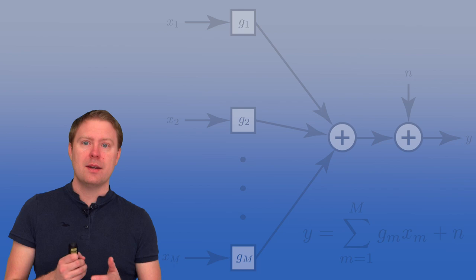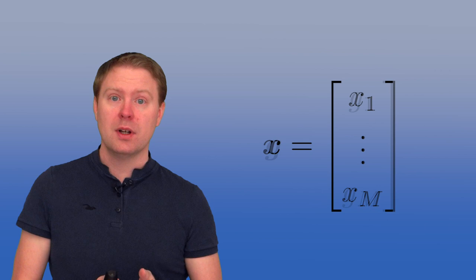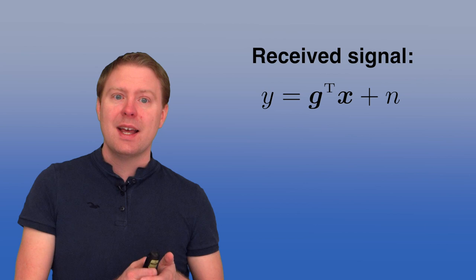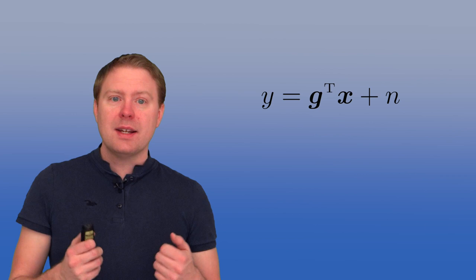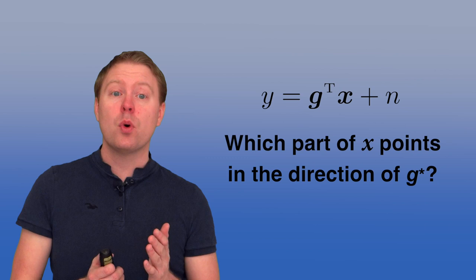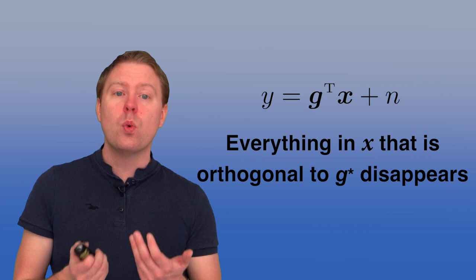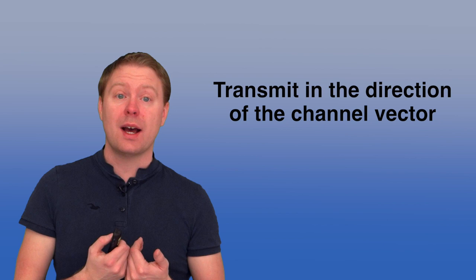It is convenient to represent this channel using vectors as well. We put all transmitted signals X1 to XM in a transmit vector X, and all channels G1 to GM in a channel vector G. The received scalar Y is then the inner product between the transmit vector X and G conjugate — written as G transpose conjugate times X — plus the noise N. By taking this inner product, we see which part of the transmit vector X points in the same direction as the channel vector G conjugate, and everything pointing in other directions is projected away. Therefore, there is no point in transmitting anything in any other direction than the one indicated by the channel vector G.